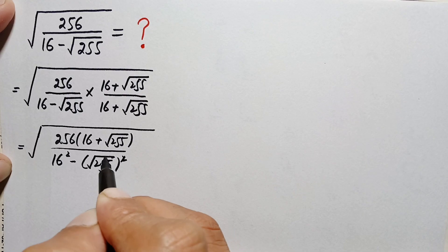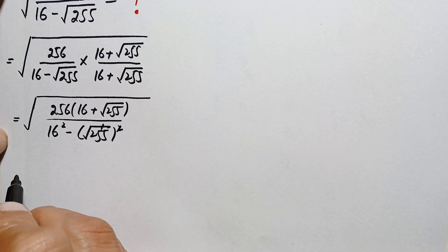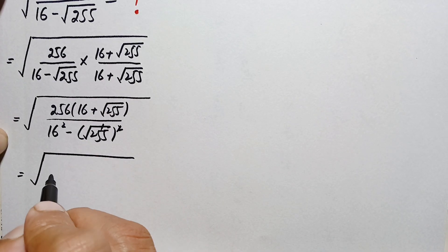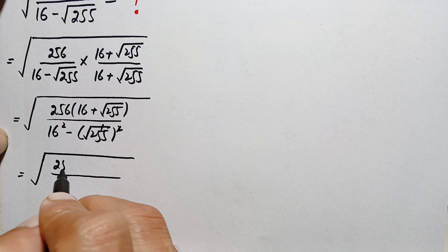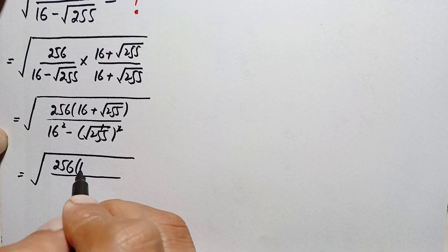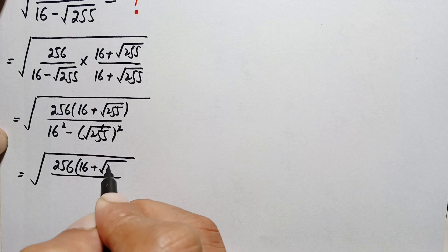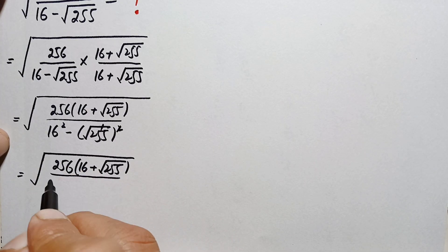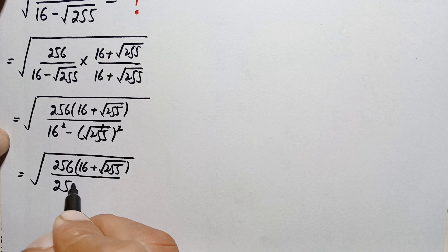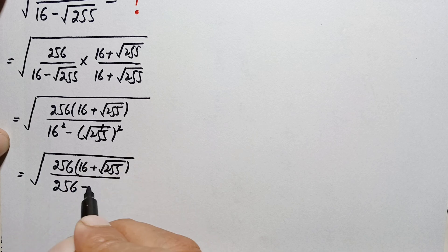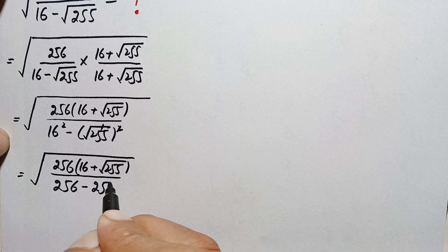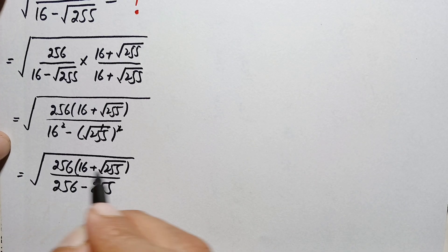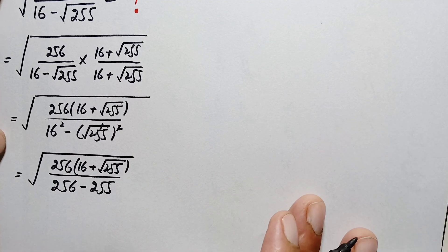Therefore we can write this denominator as 16 squared minus (square root of 255) squared. The square and square root cancel, so this becomes square root of: numerator 256 times (16 plus square root of 255), divided by 16 squared minus 255, which is 256 minus 255, which is simply 1.